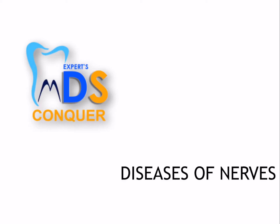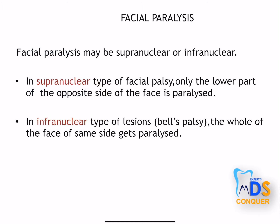Hello students, myself Dr. Saithid, team MDS Conquer. I am going to discuss diseases of the nerves. The most important disease especially related to the head and neck is facial paralysis — that is, paralysis of the facial nerve, the seventh cranial nerve. It is divided into two forms: supranuclear and infranuclear.